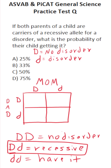In the first box, we have big D, big D — this means that this person has no genes for this disorder whatsoever. In the second box, we have capital D from the dad and lowercase d from the mom, which means that this person is a recessive carrier of the disorder.